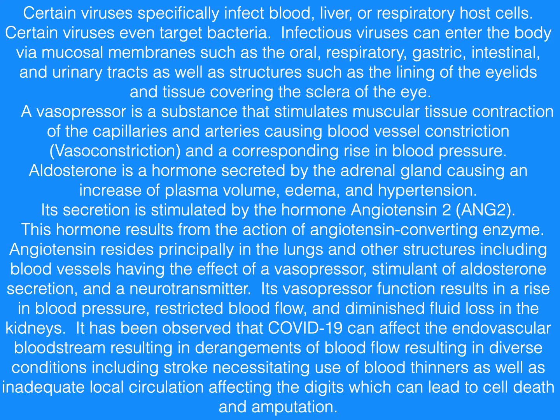This hormone results from the action of angiotensin-converting enzyme. Angiotensin resides principally in the lungs and other structures, including blood vessels, having the effect of a vasopressor, stimulant of aldosterone secretion, and a neurotransmitter.